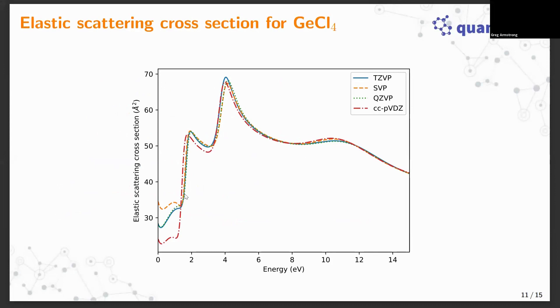I ran some QEC calculations to see how they perform. This is an elastic scattering cross section for germanium tetrachloride. The red curve is the Dunning basis set and the remaining curves are the Karlsruhe basis sets. The shapes of the cross section in all cases are similar. There is some sensitivity down here at low energies and it seems like there's some convergence between triple and quadruple zeta when you use the Karlsruhe basis sets.